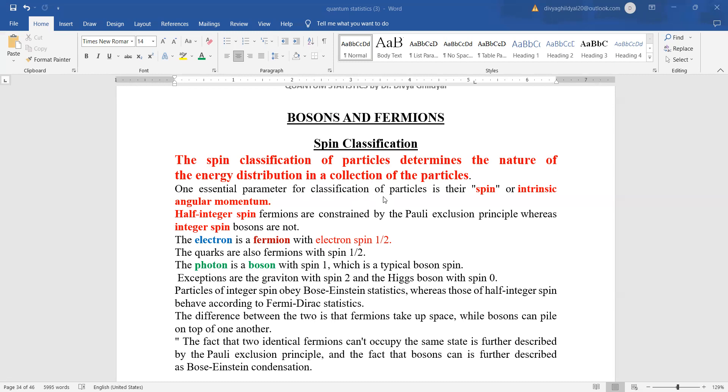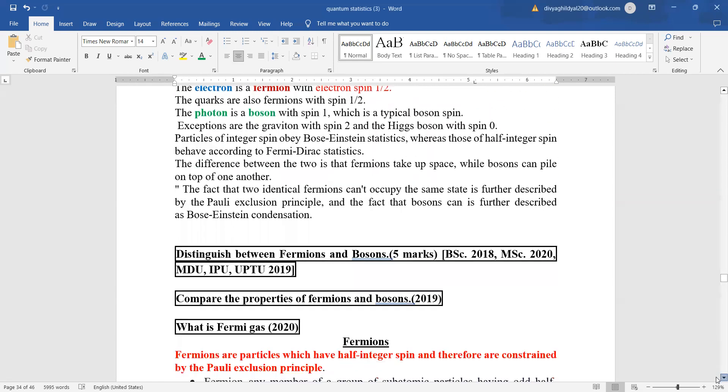If it is a half-integer spin, then it is a fermion which is constrained by Pauli's exclusion principle, and if it is an integer spin, then it is a boson. Like electron is a fermion with electron spin half. Quarks will also be fermions. Photon will be a boson because it is having a spin 1. So this way the spin number helps us in telling whether the particle is a boson or a fermion.